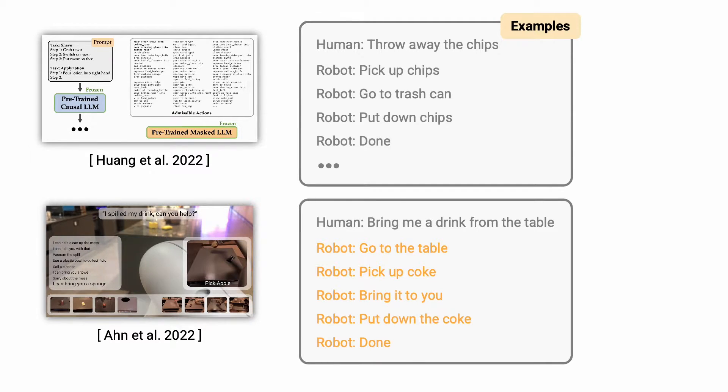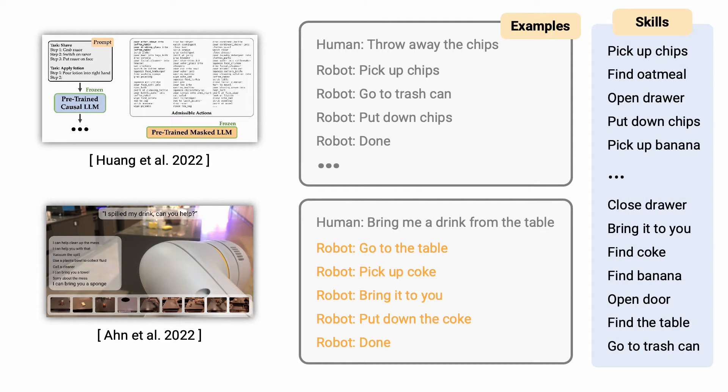To ensure the produced actions correspond to the existing skills of the robot and are grounded in the environment, prior works propose several techniques, such as semantic translation, action scoring, and leveraging affordance functions of skills.